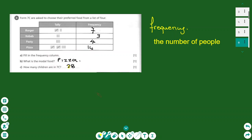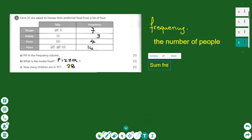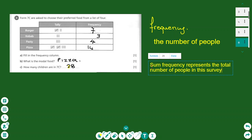The frequency for pasty is 4 and for pizza is 14. The modal food is the category with the highest frequency — that is pizza, so pizza is the modal food. To find how many children are in total, you add the frequencies because the sum of the frequencies represents the total number of people in the survey. That is how we work with frequency tables.